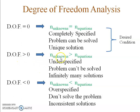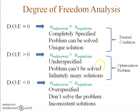When the degree of freedom is greater than zero, the number of unknowns exceeds the number of equations — the problem is underspecified and you cannot solve it uniquely; you would get infinitely many solutions. This situation arises in optimization problems, where you can arbitrarily fix as many unknowns as the degree of freedom to optimize. However, optimization problems are not covered in this material and energy balance course.